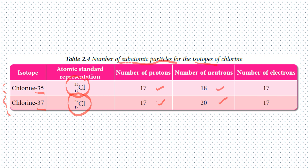The proton number is the same, which is 17. Since the nucleon number is different, the number of neutrons is also different. The number of neutrons is calculated from: nucleon number = number of protons + number of neutrons. So for chlorine-35: 35 = 17 + number of neutrons. The number of electrons is the same. For isotopes, the difference is the number of neutrons; the number of protons and electrons are the same. So the definition of isotope is atoms of the same element with the same number of protons but different number of neutrons.